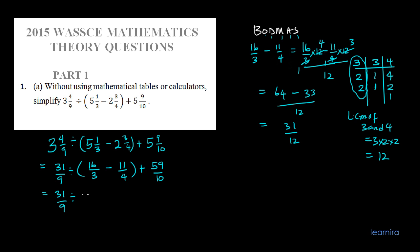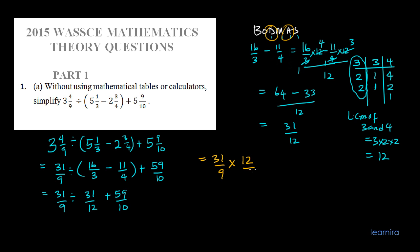We now have 31 over 9, divided by 31 over 12, plus 59 over 10. We have division and addition, but division comes before addition in BODMAS. To divide, we change division to multiplication and take the reciprocal: 31 over 9 times 12 over 31, plus 59 over 10. Multiplication comes before addition, so we multiply first. 31 cancels with 31, and 3 goes into both 9 and 12, giving us 4 over 3 plus 59 over 10.